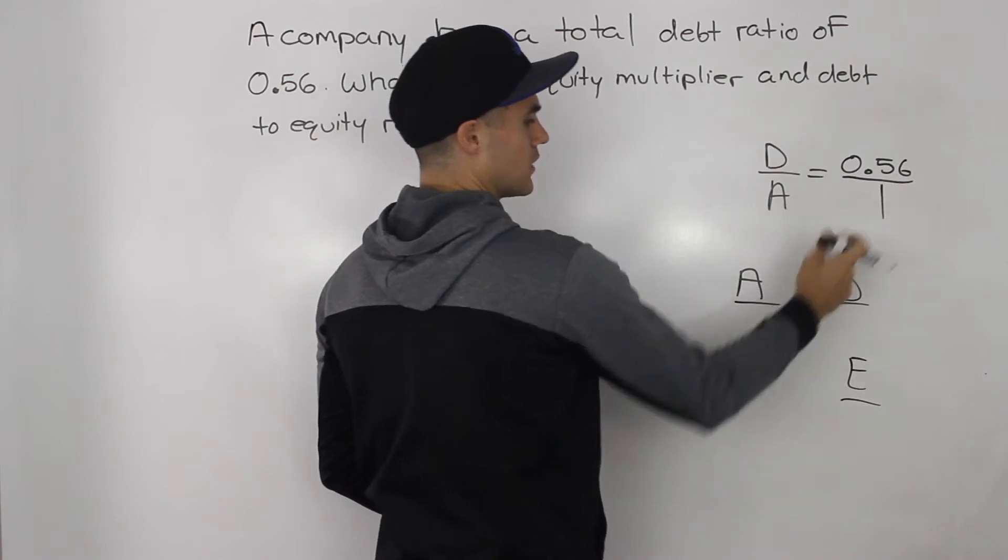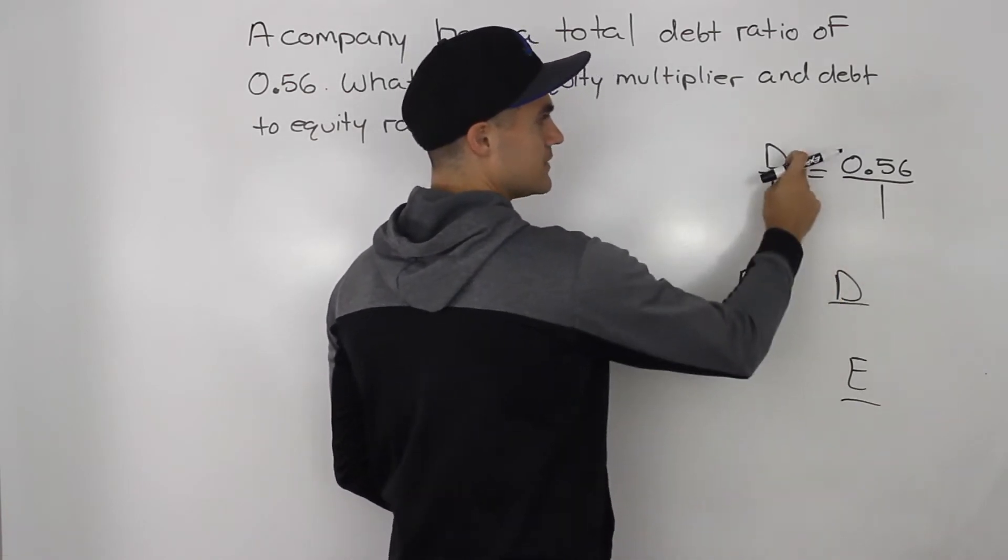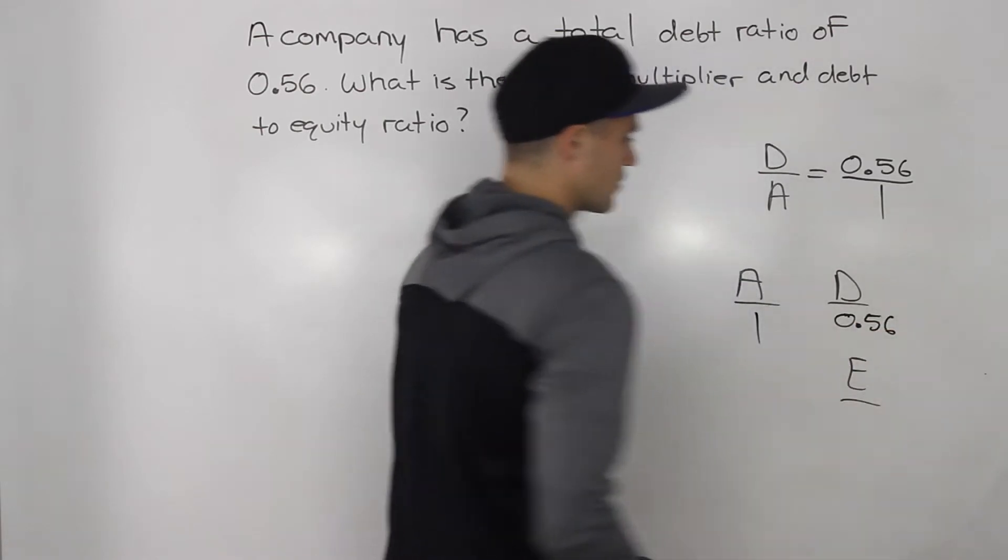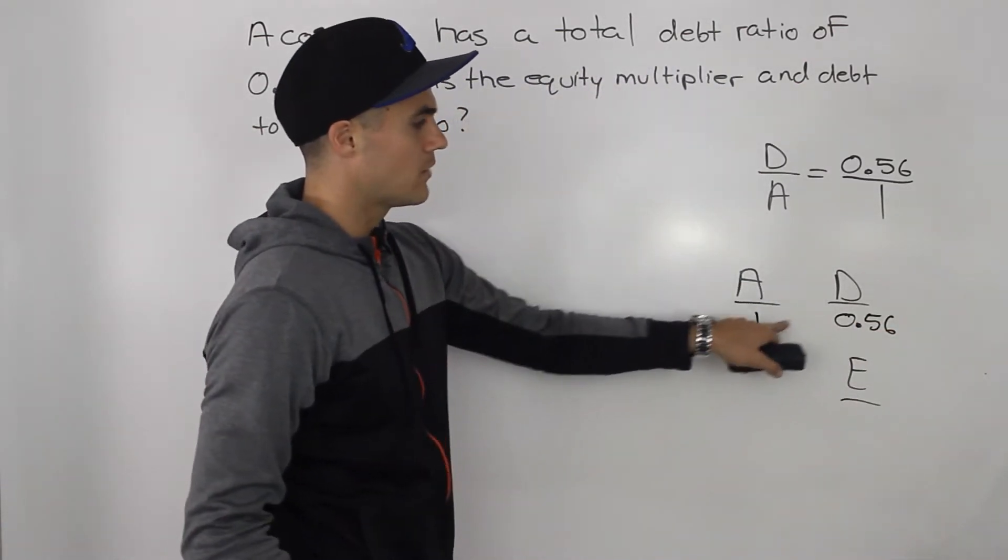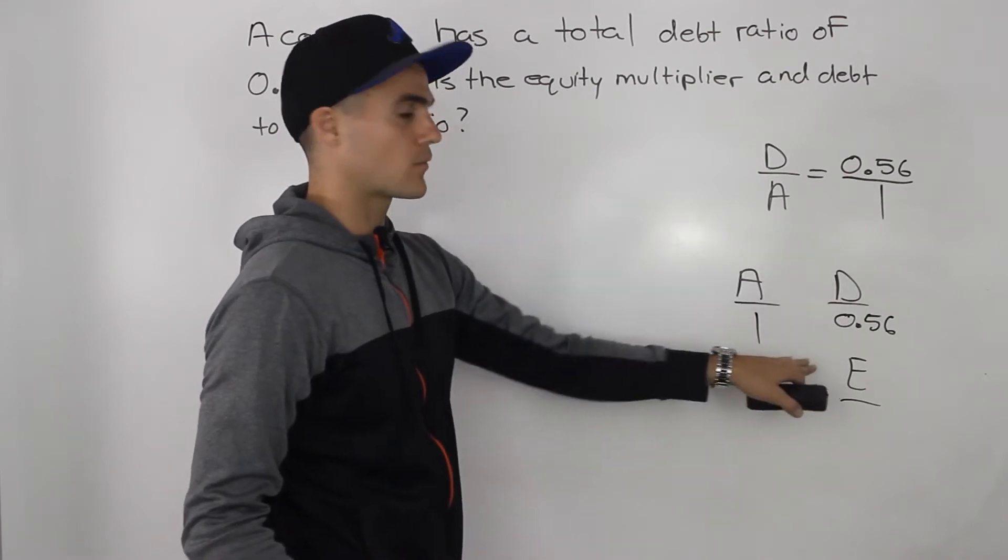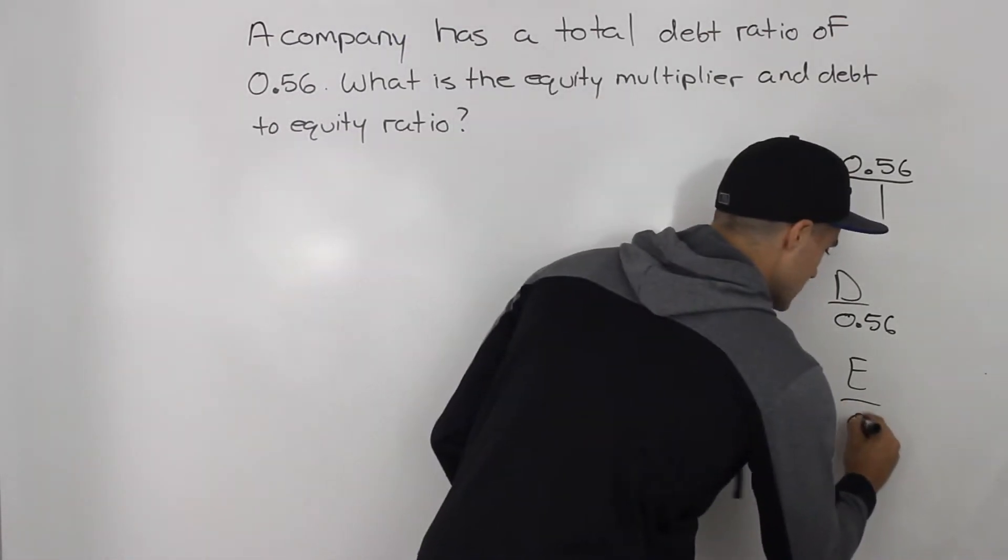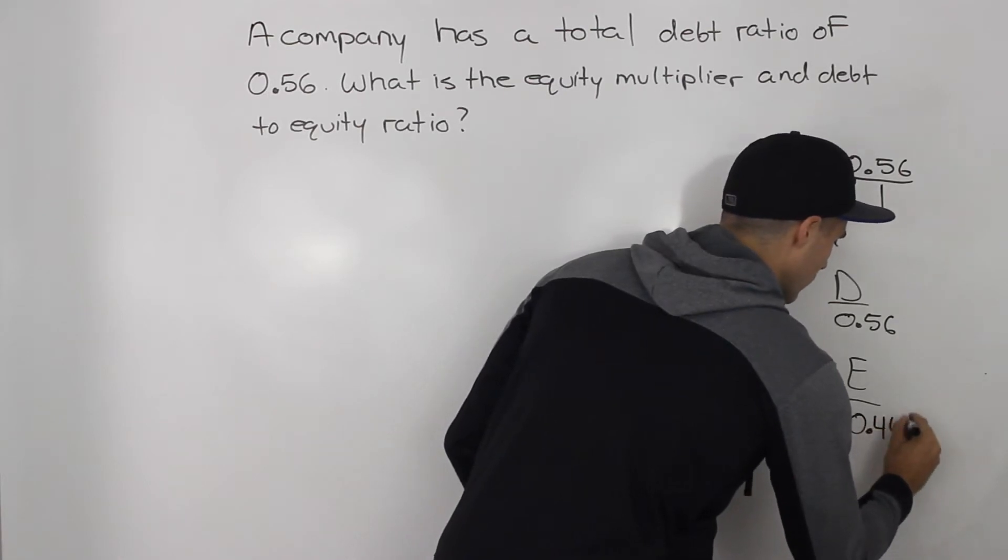Well, the assets we know is 1. The debt is 0.56. So, we know the equity is going to be 1 minus 0.56 because the left side and the right side have to balance. And 1 minus 0.56 gives us 0.44.